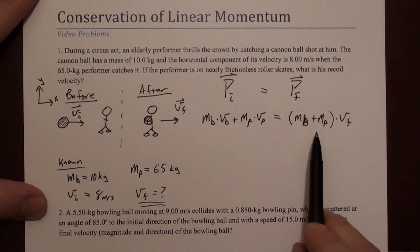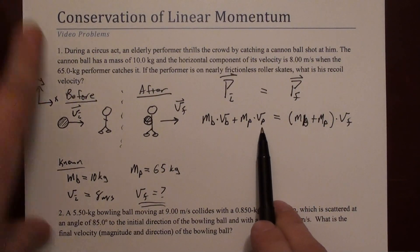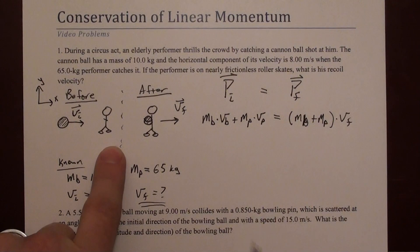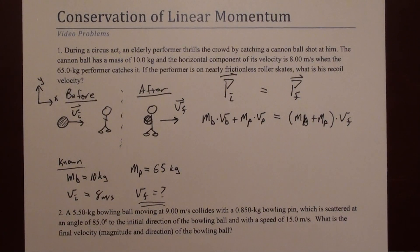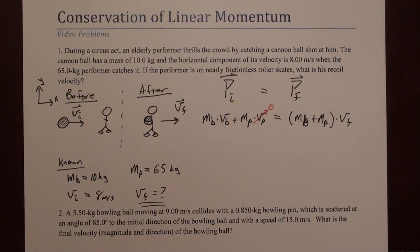In this equation we recognize that the velocity of the performer initially is zero, so I can cross that term off right away. That simplifies things a little bit.